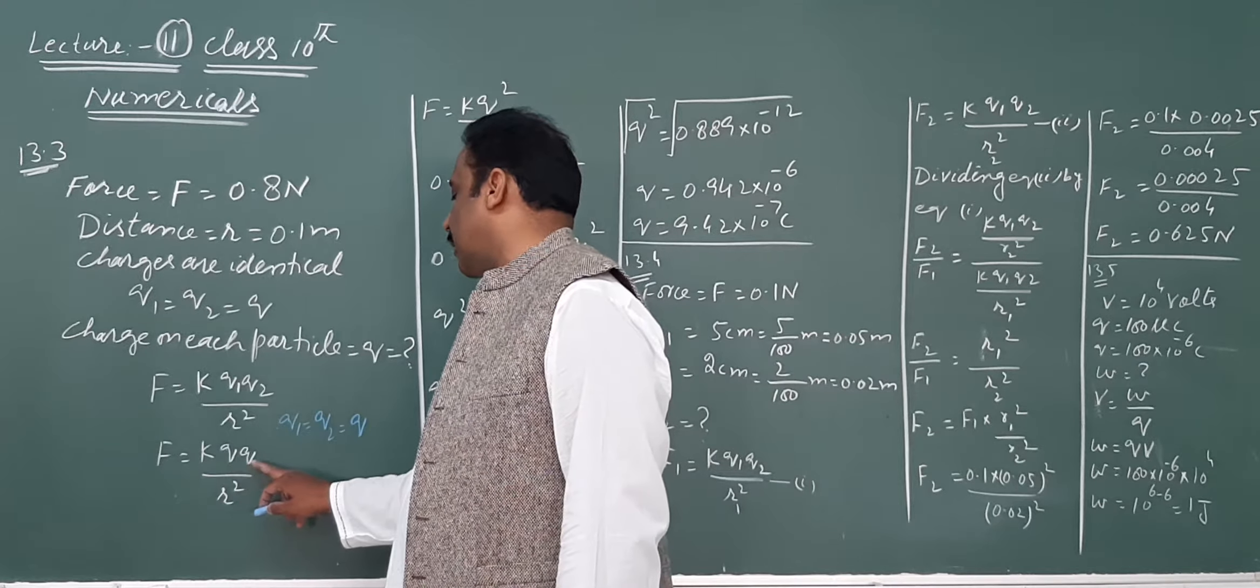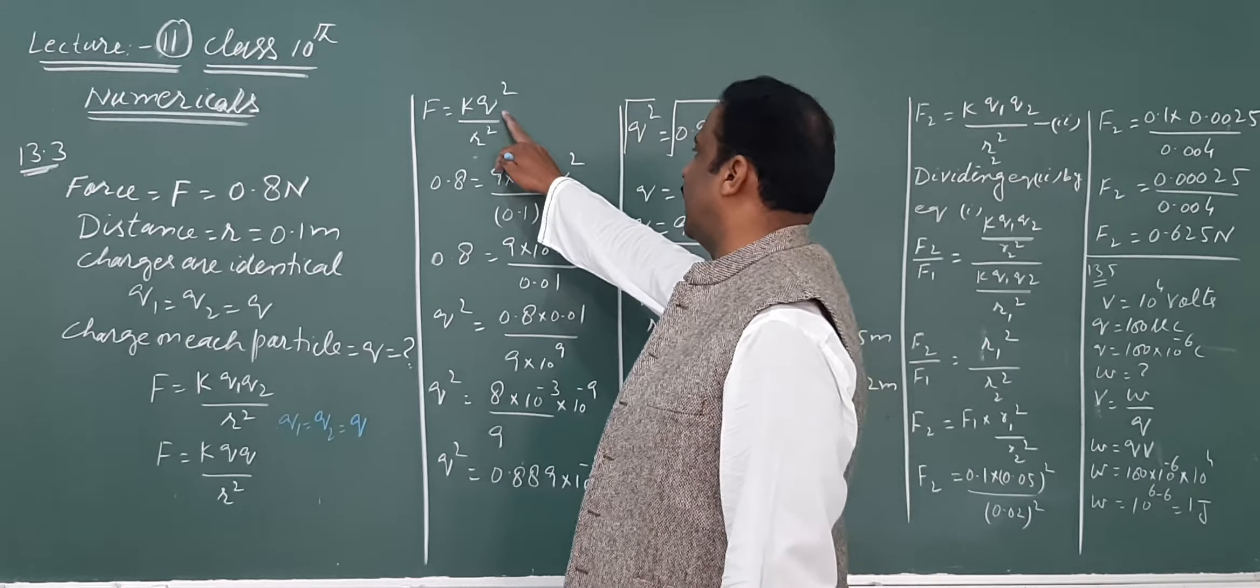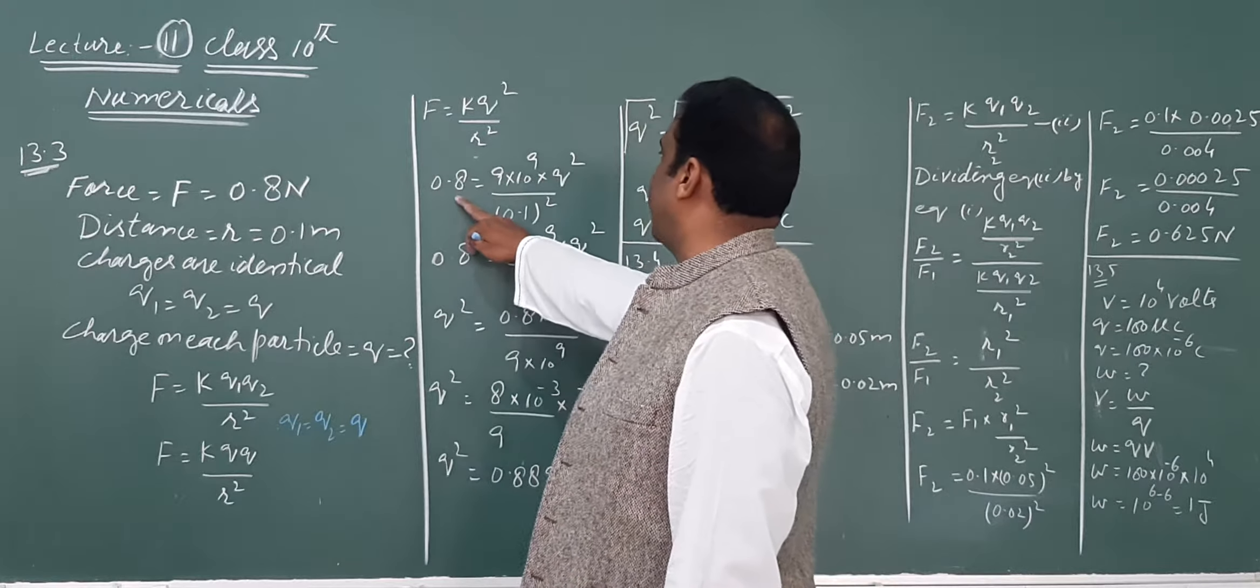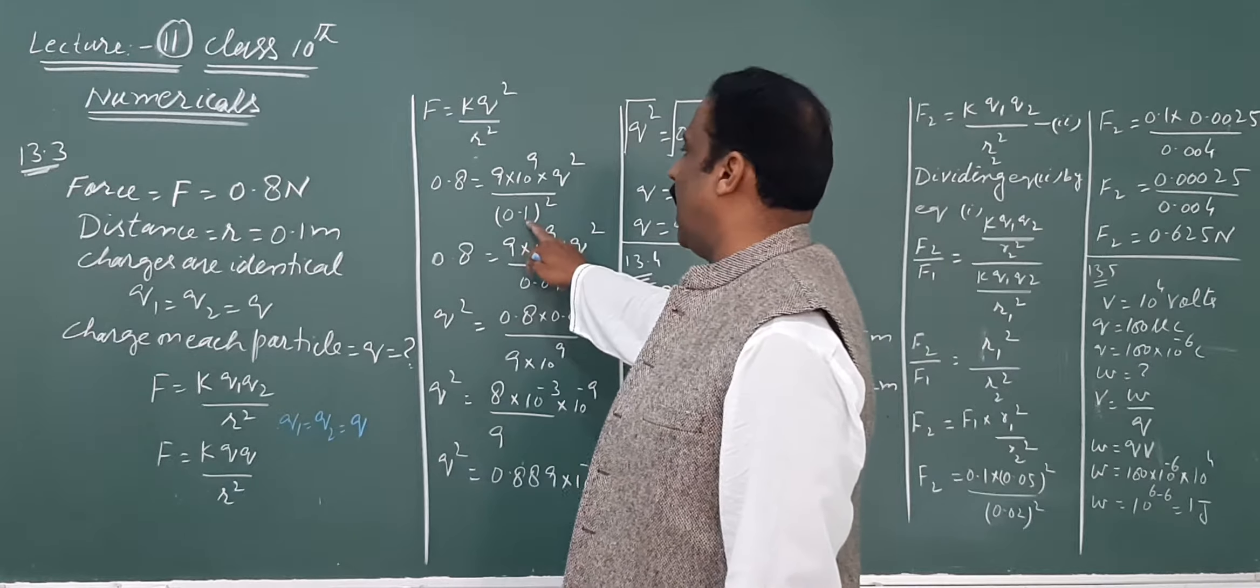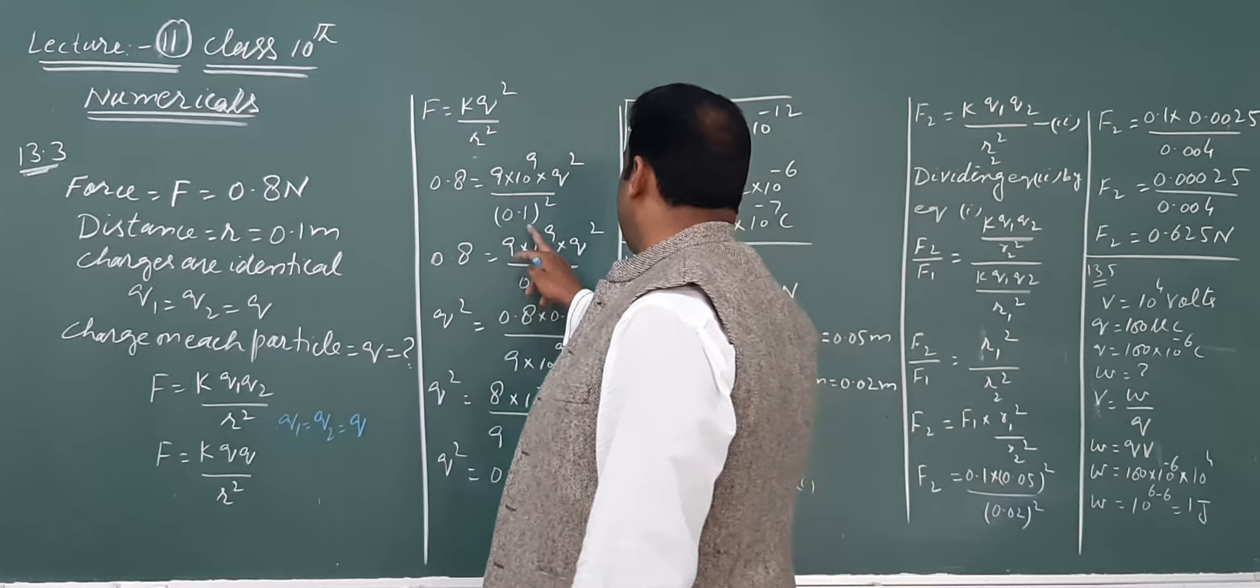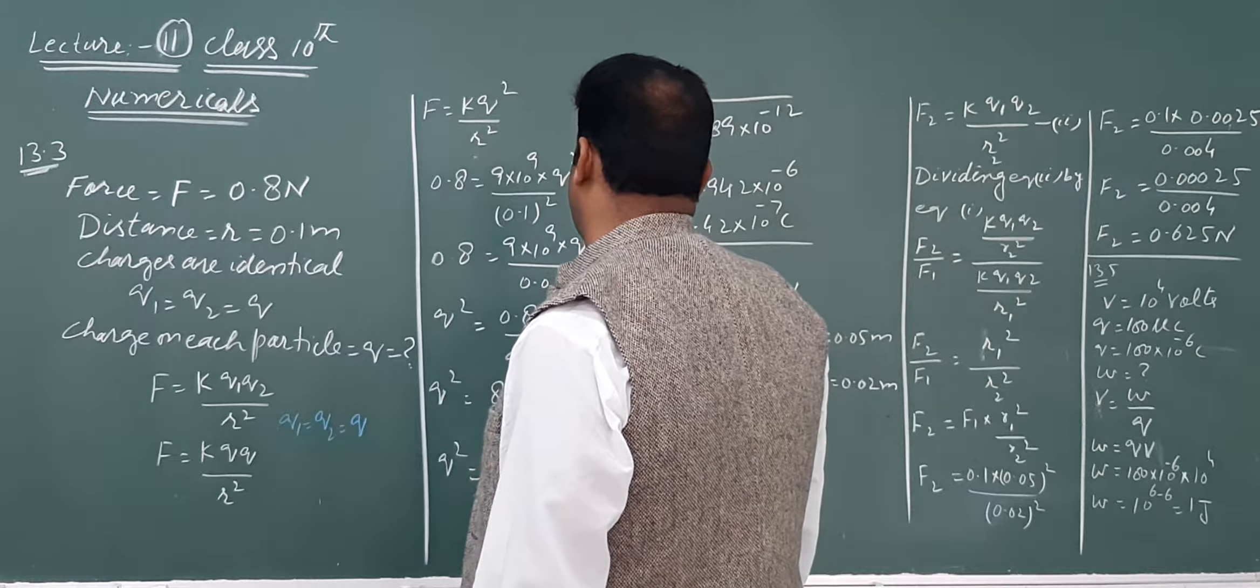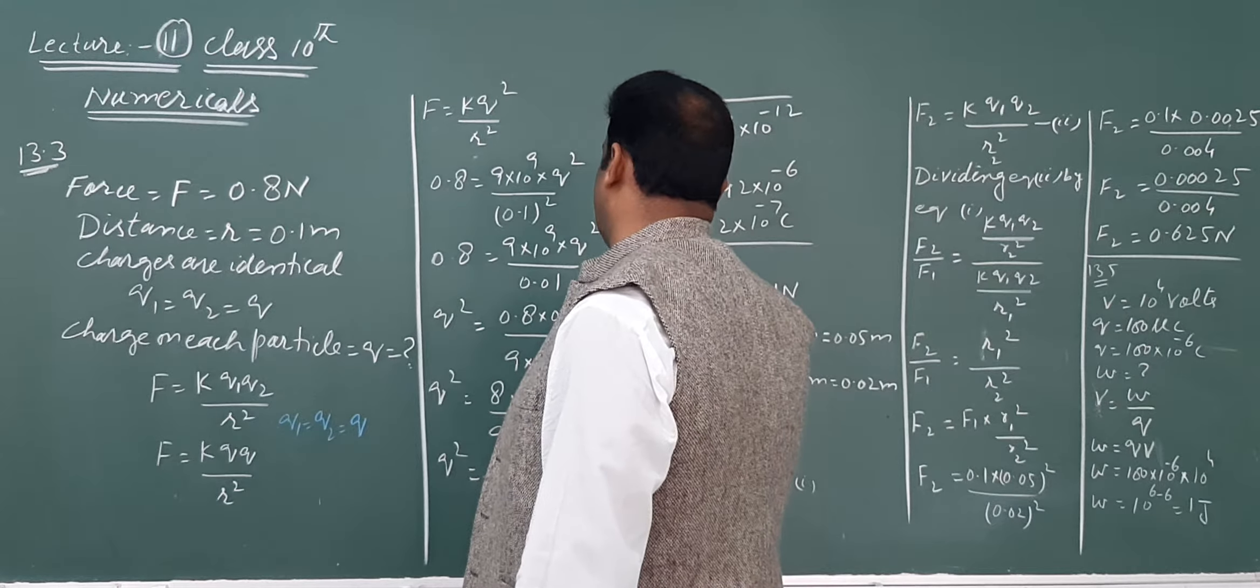According to Coulomb's law, we have the formula F equals k Q1 Q2 over r squared. Since Q1 and Q2 are both equal to Q, this becomes F equals k Q squared over r squared.